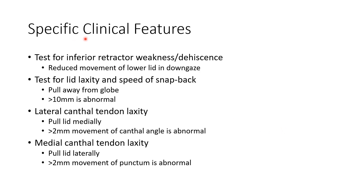Now let us discuss the specific clinical features for involutional entropion. We have to do a test for inferior retractor weakness or dehiscence. In case of involutional entropion there can be reduced movement of lower lid in down gaze. We have to test for lid laxity and speed of snapback — pulling away from globe greater than 10 mm is abnormal and indicates lid laxity. We also do lateral canthal tendon laxity test, pulling the lid medially — greater than 2 mm movement of canthal angle is abnormal. For medial canthal tendon laxity, we pull the lid laterally and greater than 2 mm movement of punctum is abnormal.